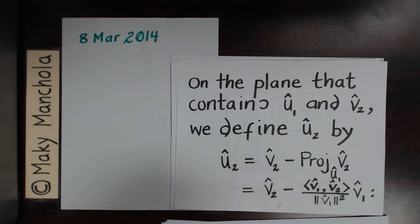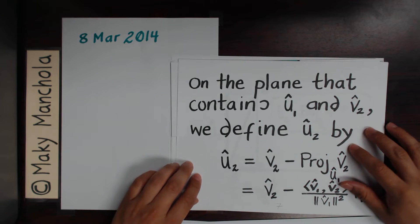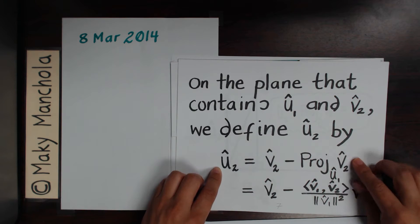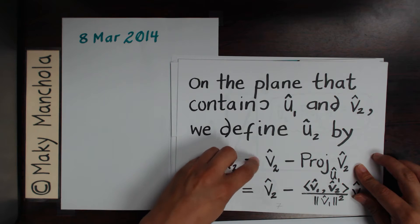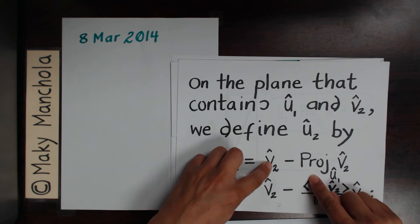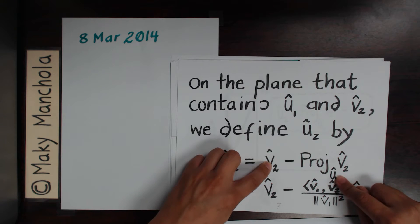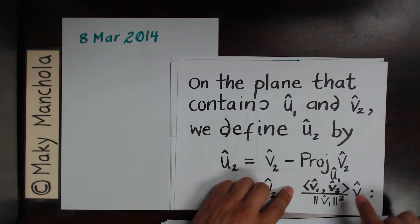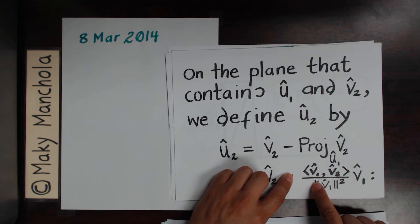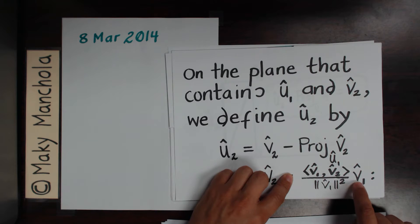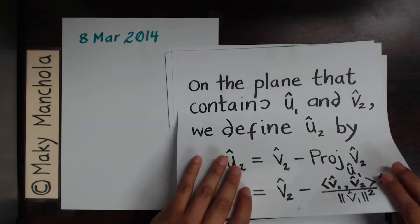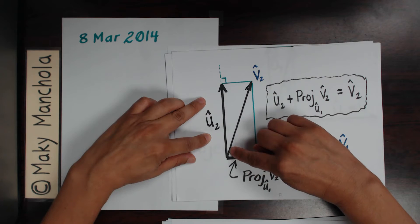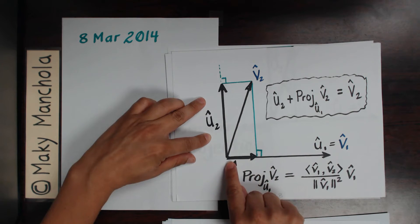Now, on the plane that contains u1 and v2, let's define u2 by making u2 equal to v2 minus the projection we just obtained — minus the projection of v2 onto u1. That is the same as saying u2 equals v2 minus the inner product of v1 and v2 over the norm of v1 squared, times v1. In this illustration we can see that u2 is being defined as the difference between v2 and the projection of v2 onto u1.